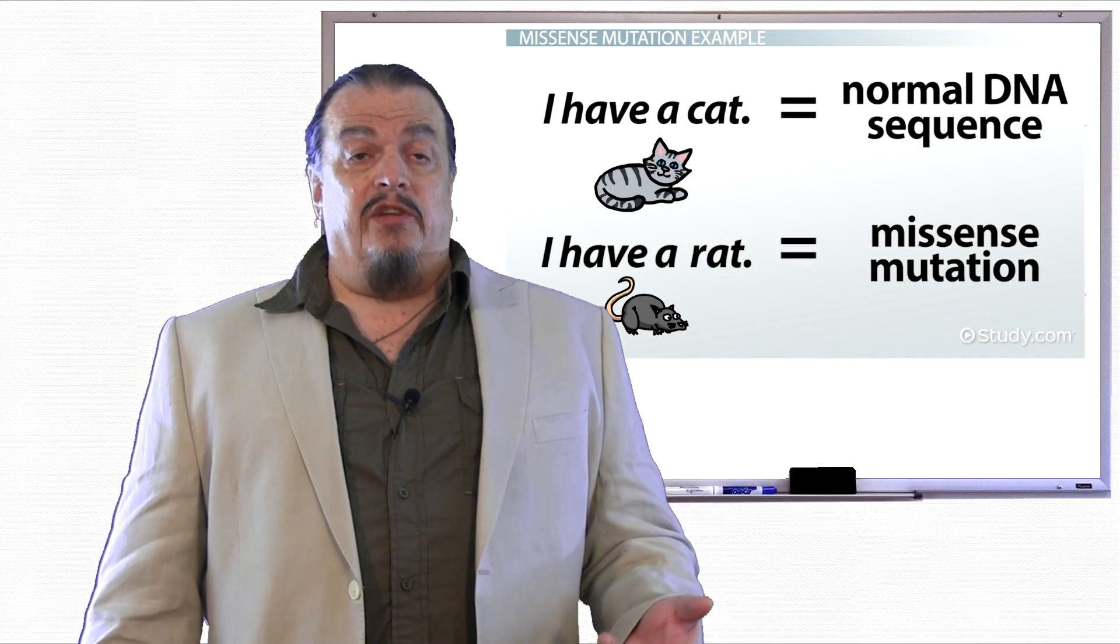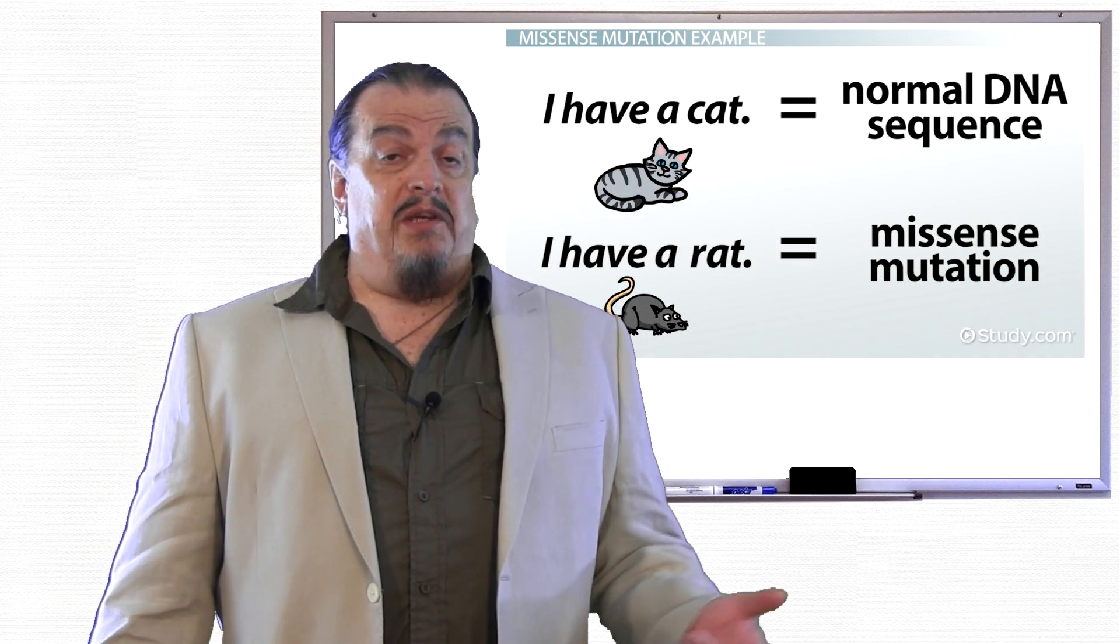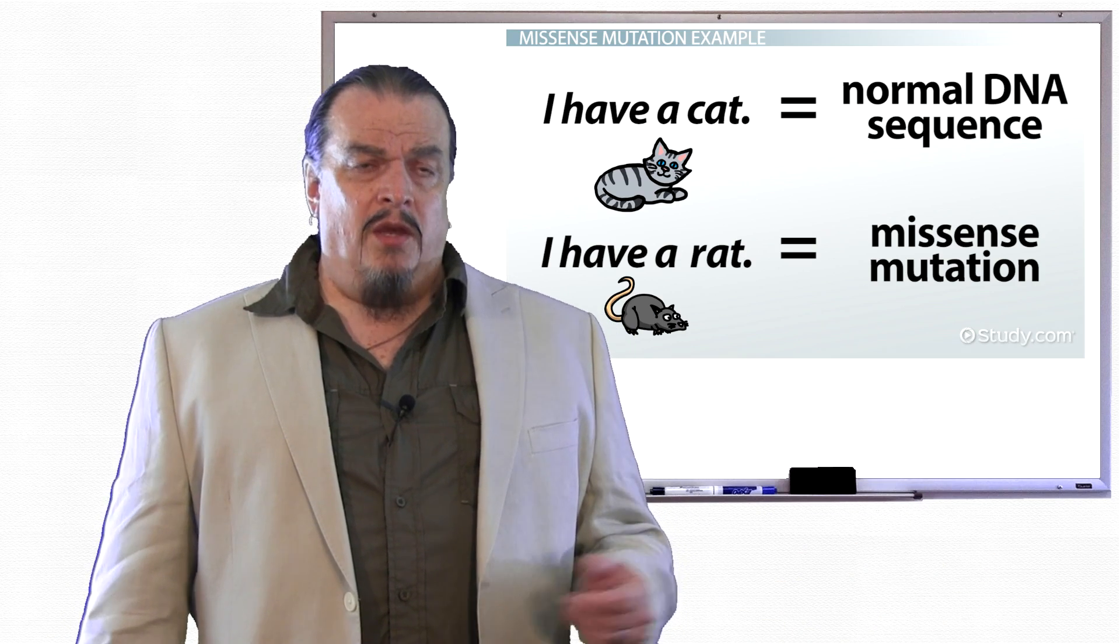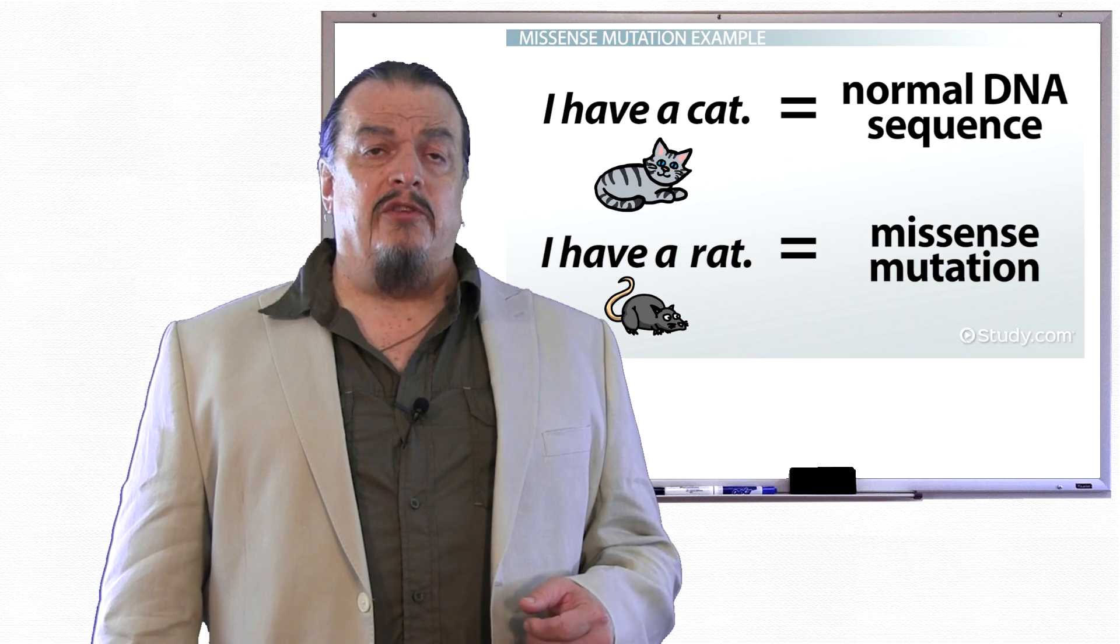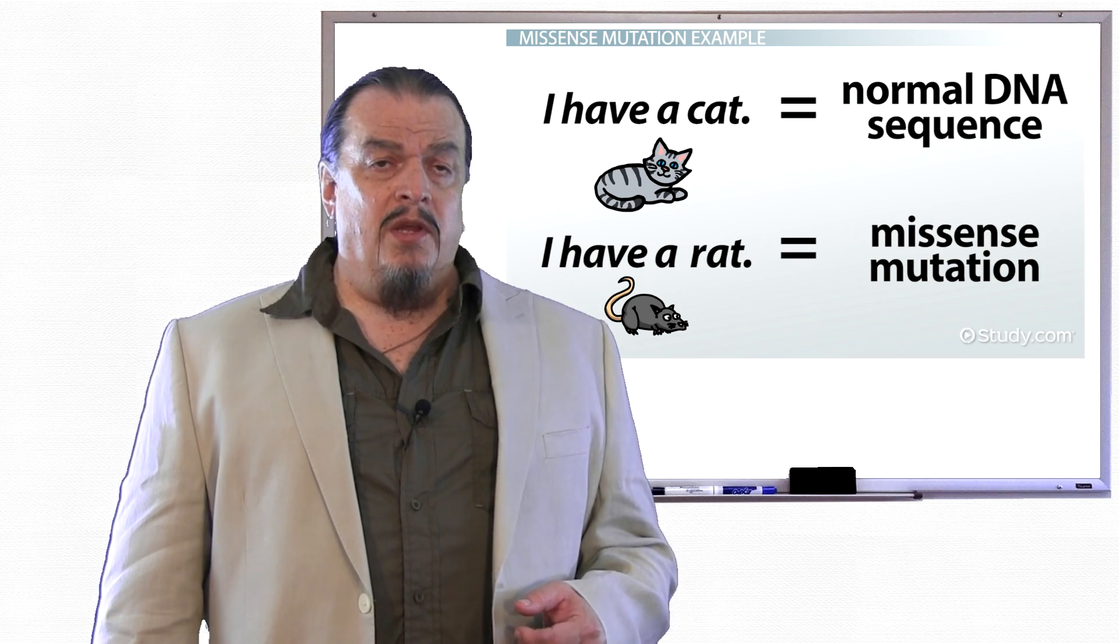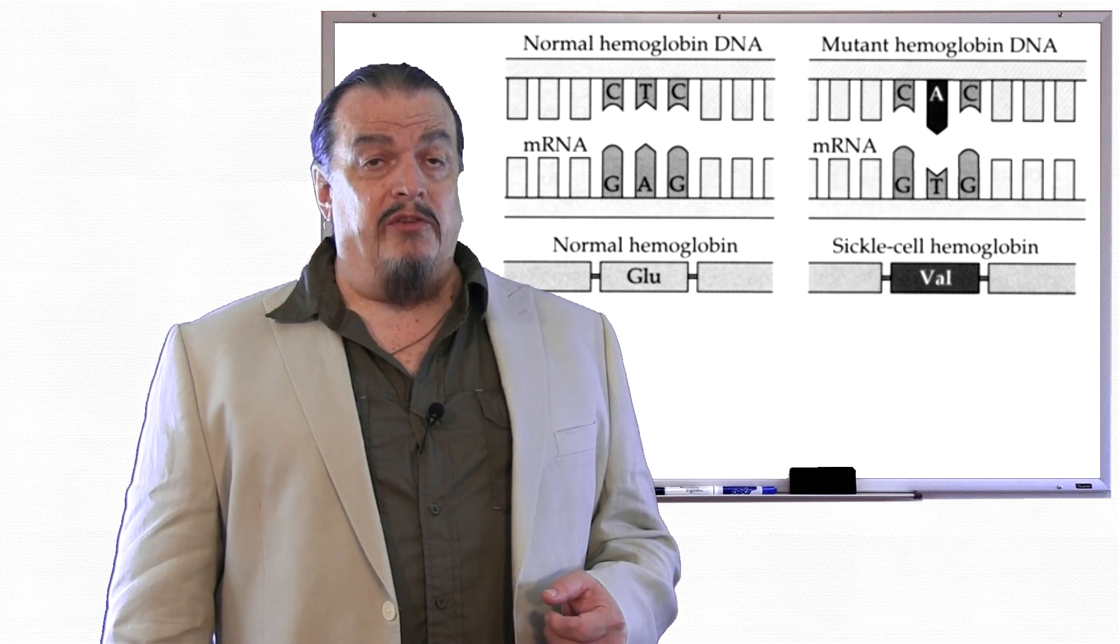Like, if you change the letter C in cat to an R, it becomes rat, which is a totally different animal. Of course, point mutations like missense mutations are not going to make a total change like that, but the changes can be significant. Let's have a look at an example of real-world missense mutation.